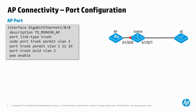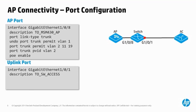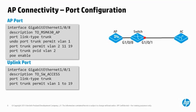You must also ensure that the switch uplinks are configured to ensure that all traffic from the AP can traverse the infrastructure. This configuration typically consists of making the port link type Trunk and permitting the required VLANs.